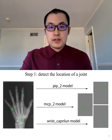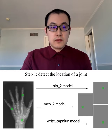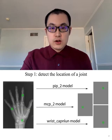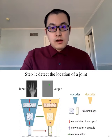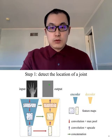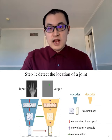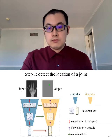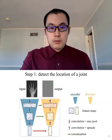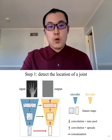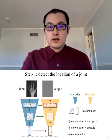At the first step, we need to detect the location of each joint. We first label the location by a square mask, and then for each joint we build a specific deep learning model to predict the location. We adapted a classic convolutional neural network model, U-net, which has an encoder and a decoder and multiple operations used to extract features from the original image. We build a model for each joint.